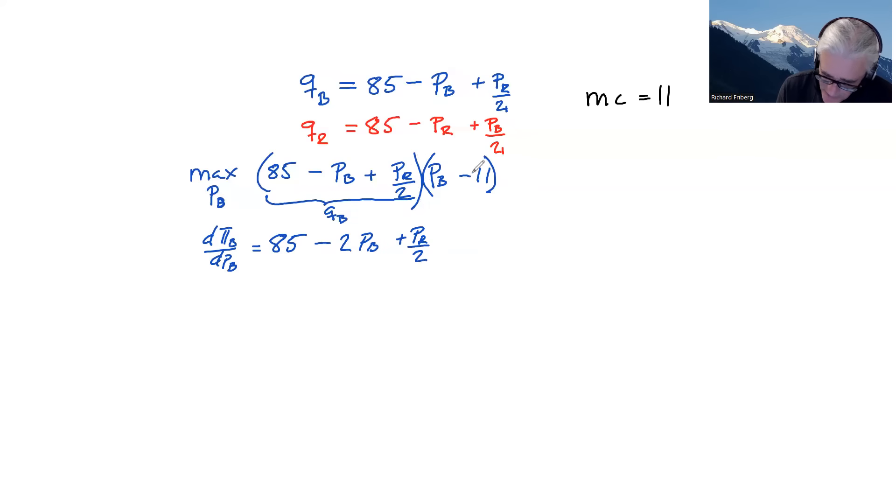And then we need to remember the 11 here. The PB only comes in here. So minus PB times minus 11 becomes 11 PB. Differentiate that with respect to PB becomes 11. So plus 11. That is all equal to zero.